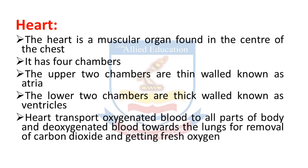Heart transports oxygenated blood to all parts of the body — dil kya karta hai ki oxygenated blood ko jism ke tamaam hisson mein transport karta hai. Oxygenated blood aisa blood hota hai jis mein oxygen maujood hoti hai, yaani oxygen-rich blood. Aur deoxygenated blood ko transport karta hai phephdon ki taraf for removal of carbon dioxide and getting fresh oxygen — taaki carbon dioxide ko remove kiya ja sake aur taaza oxygen hasil ki ja sake.